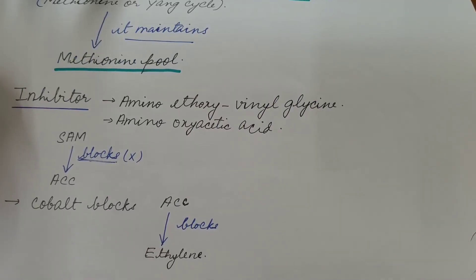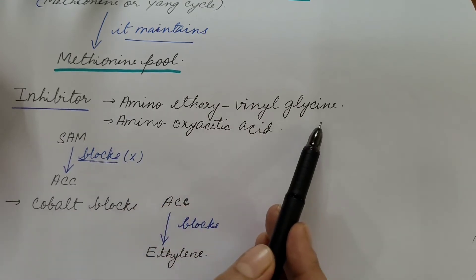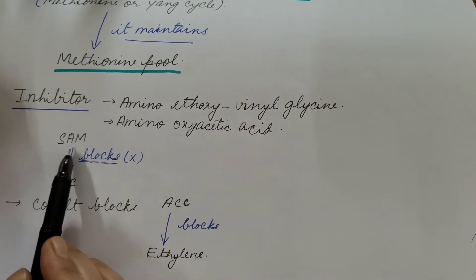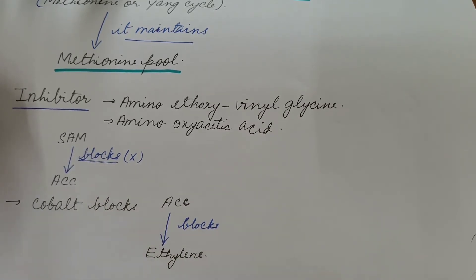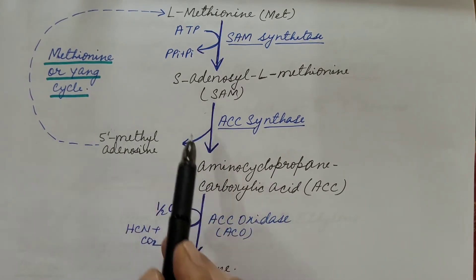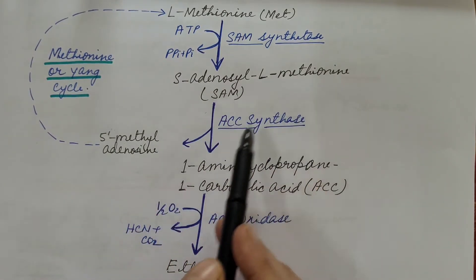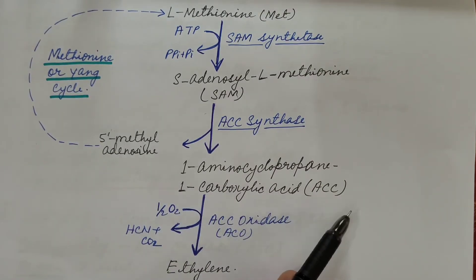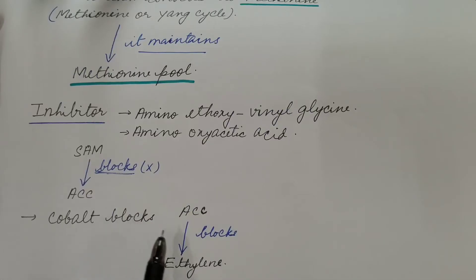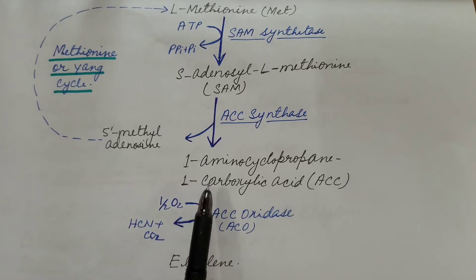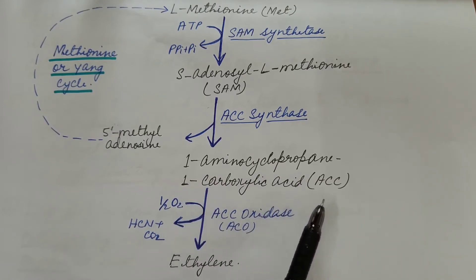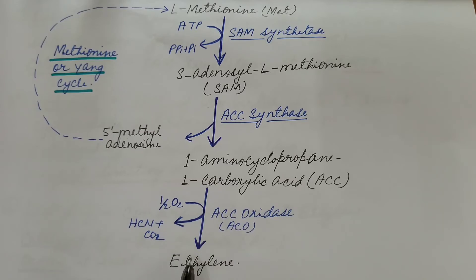Regarding inhibitors of this pathway: amino ethoxyvinylglycine (AVG) and aminooxyacetic acid (AOA) block the conversion of SAM into ACC — that is, they block the second step. Cobalt blocks the conversion of ACC into ethylene — that is, it blocks the last step.